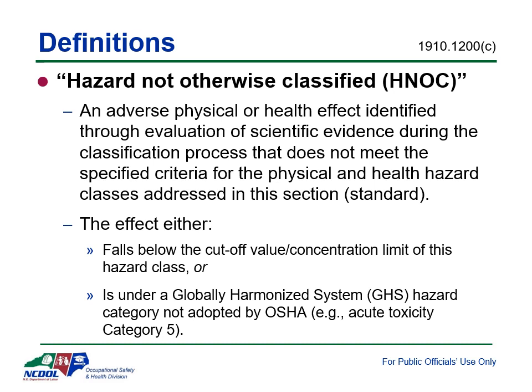OSHA created the Hazard Not Otherwise Classified (HNOC) definition to cover health or physical hazard substances that are intrinsically dangerous during normal use or foreseeable emergencies, but do not meet the cutoff values or concentration limit of a hazard class, or are under a GHS hazard category not adopted by OSHA. HNOCs are required to appear in Section 2 of the associated Safety Data Sheet. OSHA's HNOC definition ensures that hazards covered under the previous HazCom standard remain covered under the current revised standard. An example of an HNOC is a static accumulator — static accumulating flammable materials can become electrostatically charged even in bonded and grounded equipment, and sparks can ignite vapor causing flash fire or explosion.